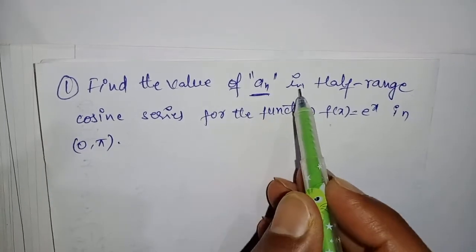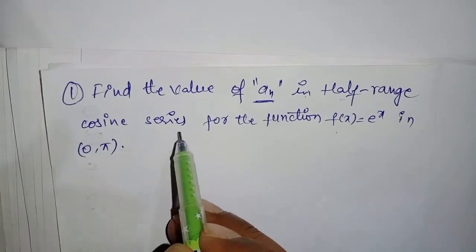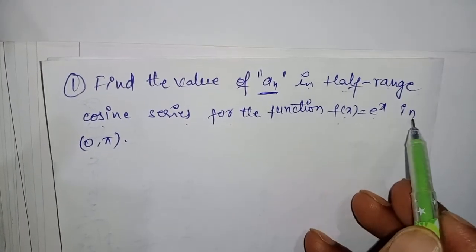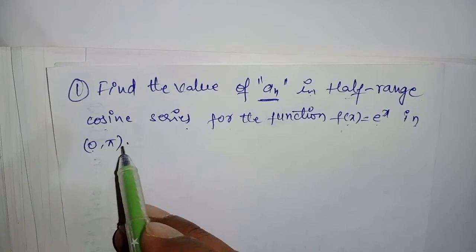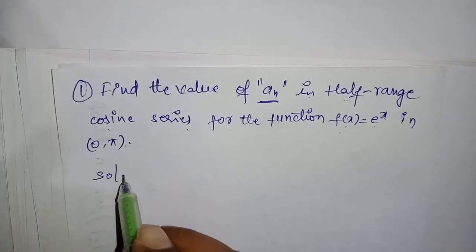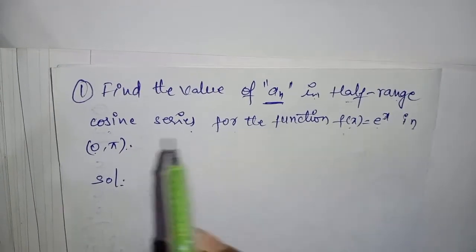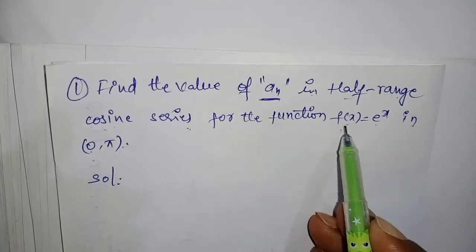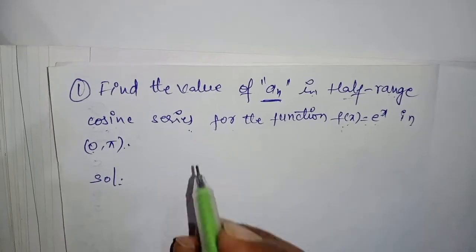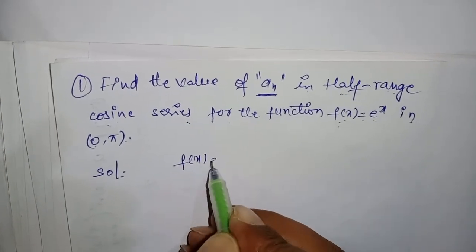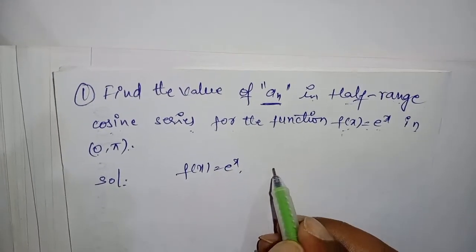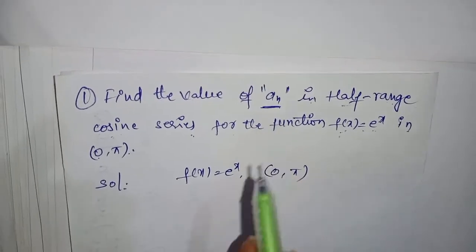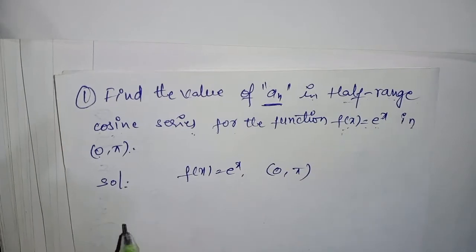Find the value of aₙ in the half-range cosine series for the function f(x) = eˣ in the interval (0, π). Since this is a half-range cosine series, we need to find only aₙ. The function is f(x) = eˣ and the limits are 0 to π.